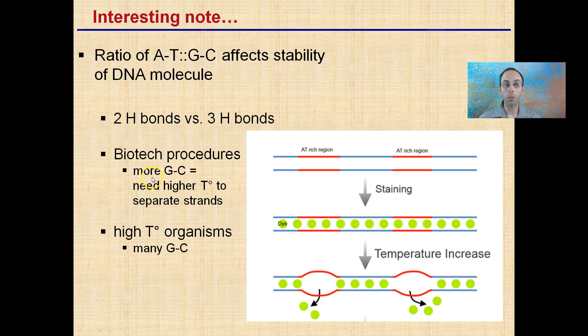For biotech procedures, the more G to C bonds, the higher the temperature is needed to separate out the strands. If we talk about DNA and separating out a double helix strand here, there's a lot of G and C bonds, there's going to be higher temperature required to be able to separate that out. So, many organisms that can withstand high temperatures have many G to C bonds within their DNA molecule.